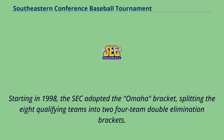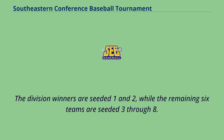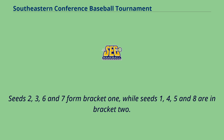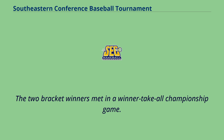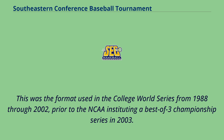Starting in 1998, the SEC adopted the Omaha bracket, splitting the eight qualifying teams into two four-team double elimination brackets. The division winners are seeded one and two, while the remaining six teams are seeded three through eight. Seeds two, three, six, and seven form bracket one, while seeds one, four, five, and eight are in bracket two. The two bracket winners met in a winner-take-all championship game. This was the format used in the College World Series from 1988 through 2002, prior to the NCAA instituting a best-of-three championship series in 2003.